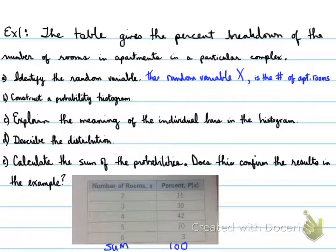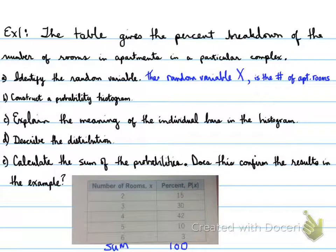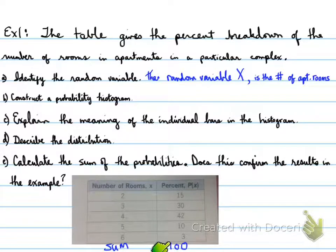Calculating the sum of the probabilities: as you can see, the sum is 100. That means this is the only type of apartments offered in this complex, confirming the results.